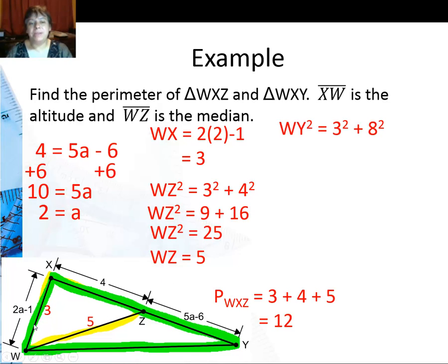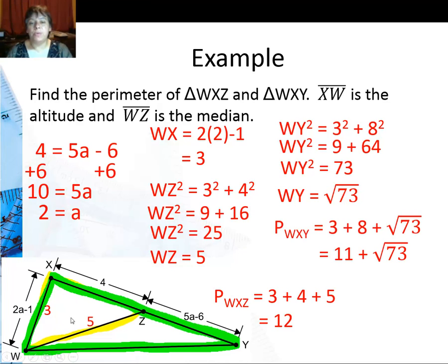And I know that this is 3 and that's 8. So using Pythagorean theorem I get that this length is square root of 73. So the perimeter of the green triangle will be 3 plus 8 plus square root of 73 or 11 plus square root of 73.